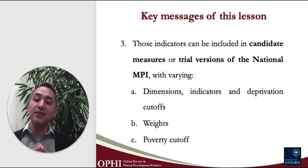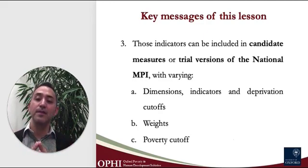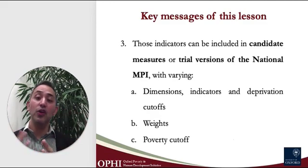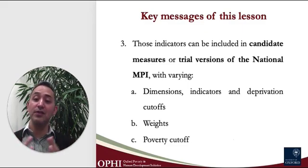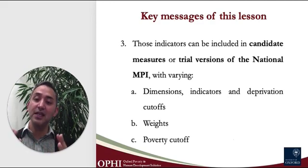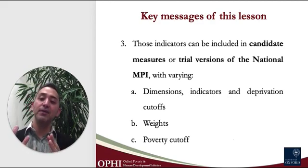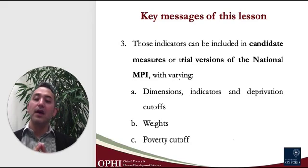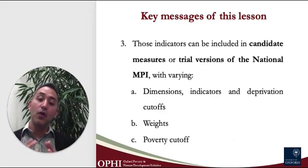These candidate measures can differ for mainly three reasons. The first is that they may regroup indicators in different dimensions or define different deprivation cutoffs. For instance, one trial measure may consider sanitation as an indicator of the health dimension alongside nutrition, whereas another one can consider it to be an indicator of living conditions alongside housing. As another example, two trial measures may both consider years of schooling as an indicator of the education dimension, but one associates deprivation to having less than six years of schooling, whereas the other considers eight years of schooling.